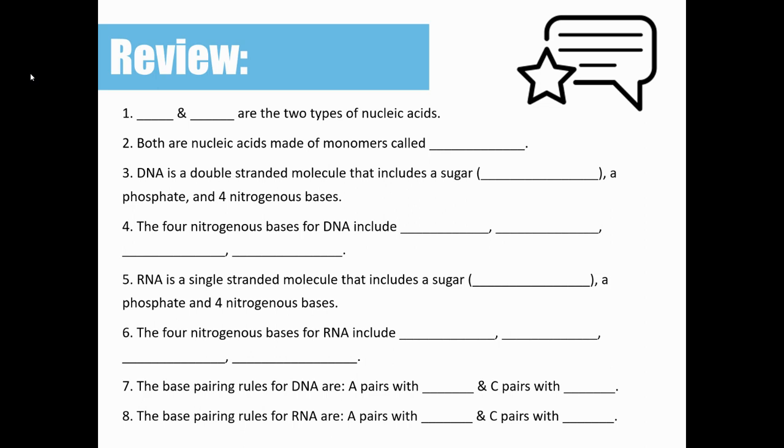All right, number one: DNA and RNA are two types of nucleic acids. You should have put DNA and RNA, so we talked about those in the last lesson. Both are nucleic acids made of monomers that we call nucleotides. Number three, DNA is a double-stranded molecule that includes the sugar deoxyribose. That's where it gets its name from, but it also contains two other components to that nucleotide, which is a phosphate and then four nitrogenous bases.